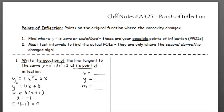We have the x-coordinate of our point of inflection, so I'm going to put it over here. Zero is not the y-coordinate — it might be, but that's not what this is saying. To find the y-coordinate of the point of inflection requires us to go back to the original equation and evaluate it at negative one.